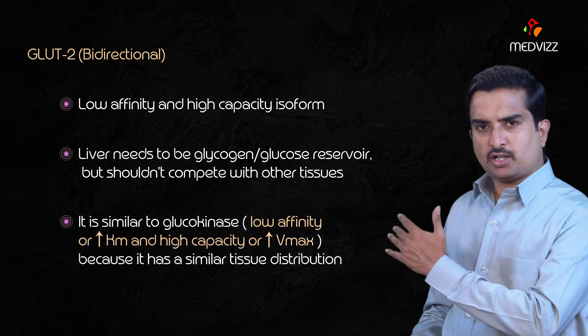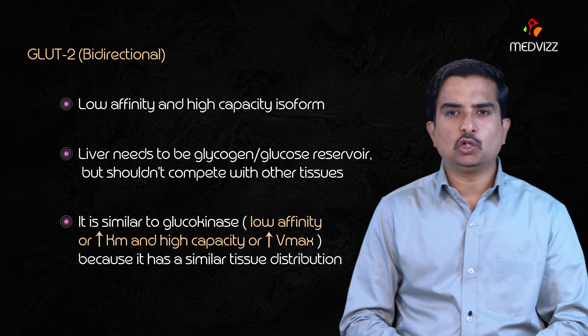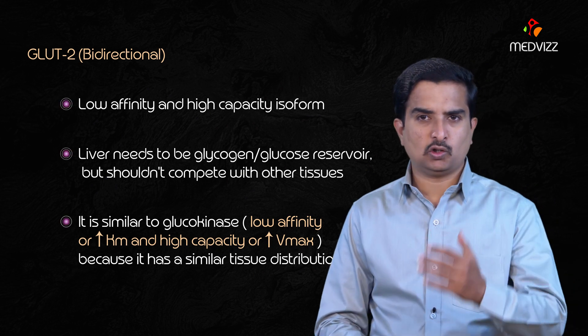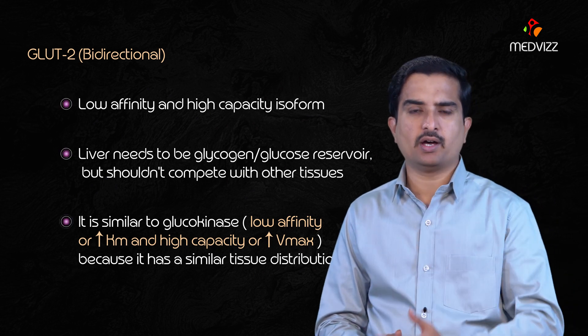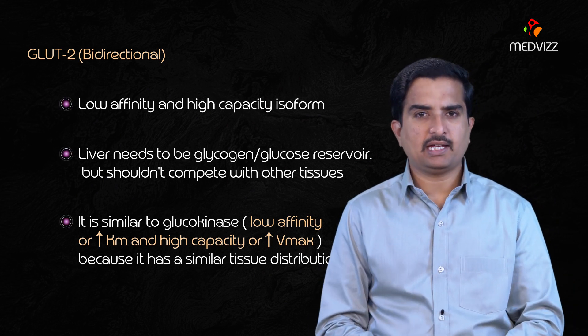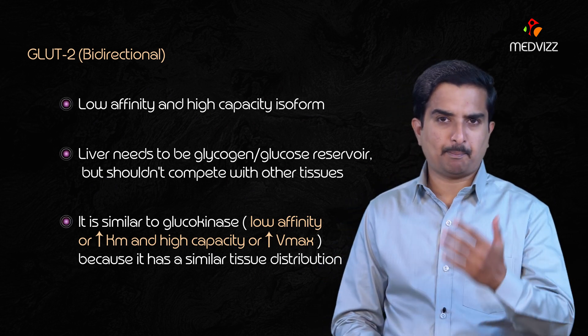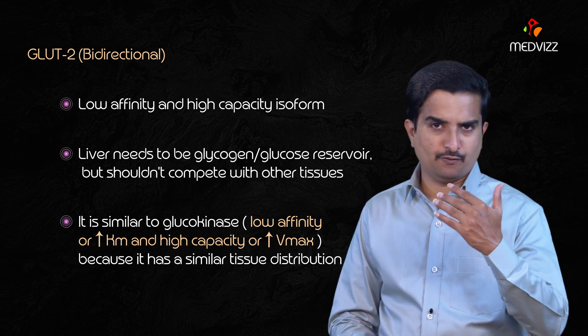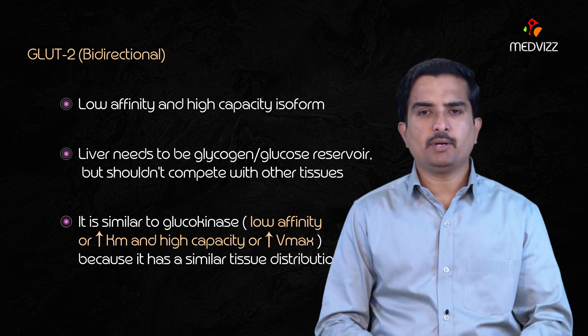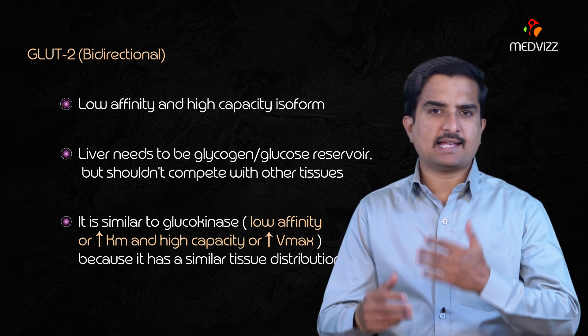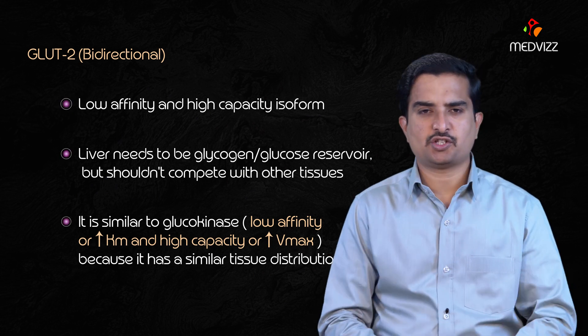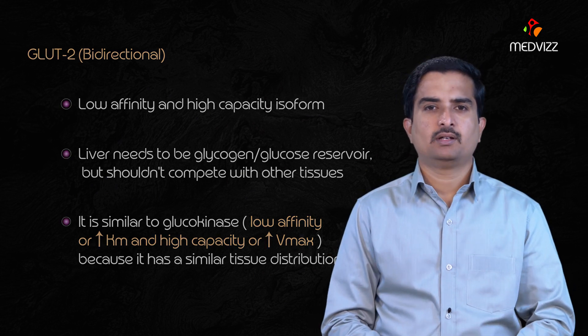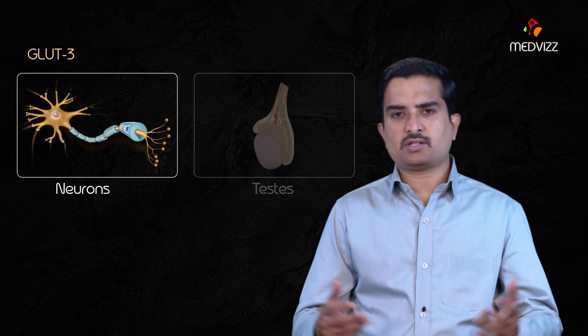This should look similar to that of glucokinase — that is, low affinity or high KM, and high capacity or high Vmax — because GLUT 2 has a similar tissue distribution to glucokinase. Next is GLUT 3, which is found in neurons, stressors, and the placenta.